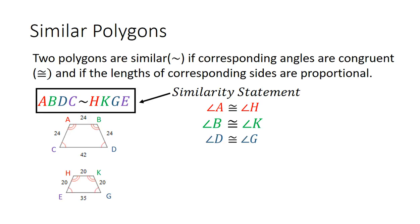Next, we have angle D is congruent to angle G — I have them both in blue. Angle D has one arc and so does angle G, which means they are congruent. D is third in the similarity statement, and so is G, so the angles are congruent to each other.